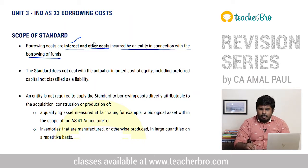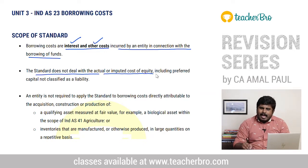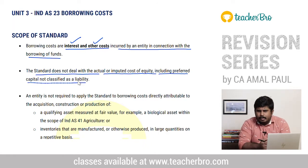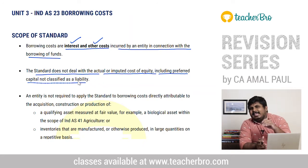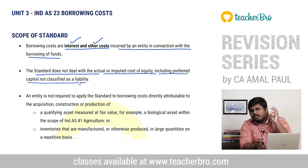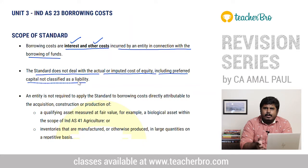Interest which is related to the cost should be considered. This standard does not deal with actual or imputed cost on equity, including preferred capital not classified as liability. So preference share capital and equity share capital — the cost of those would not be taken as borrowing cost. We have to consider only liability — borrowing of funds which are liability.